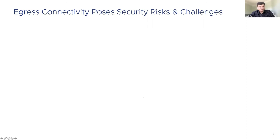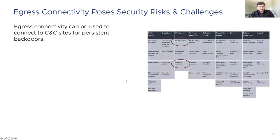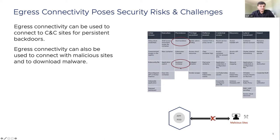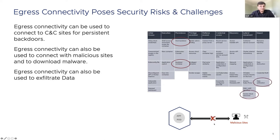While egress connectivity is required, it also poses different security risks and challenges. For example, in cases of attacks that deploy persistent backdoors, egress connectivity can be used to connect to command and control servers. For a compromised workload, they may reach out to malicious sites to download malware such as ransomware. Egress connectivity can also be exploited for data exfiltration — a hacker may access a cloud resource such as an S3 bucket and upload data to an egress server.